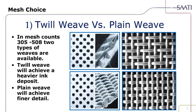Saudia is one of the world's largest mesh manufacturers. We offer mesh in two ways: twill weave and plain weave. In mesh counts 305 to 508, both types of weaves are available. Twill weave achieves a heavier ink deposit, whereas plain weave achieves finer detail. The illustrations show a distorted printed dot with the twill weave and how it's woven, versus a cleaner, crisper dot with a one-over-one-under plain weave construction.